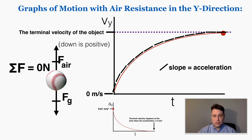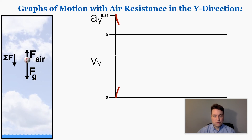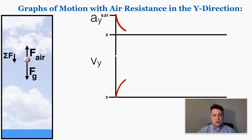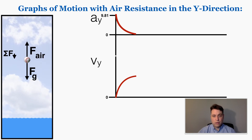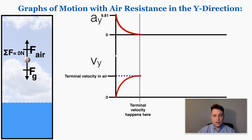We can also look at the acceleration and velocity graphs of objects moving from one medium to another. Let's say we drop a ball above the ocean and see what happens as it falls and then hits the water. The second we drop it, it starts with an acceleration of 9.81 because the only force on it is gravity and velocity is zero. Just like before, these two graphs curve until it hits its terminal velocity in air — that y-value on the velocity graph is the terminal velocity of the ball in air.